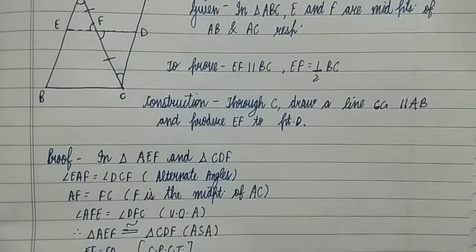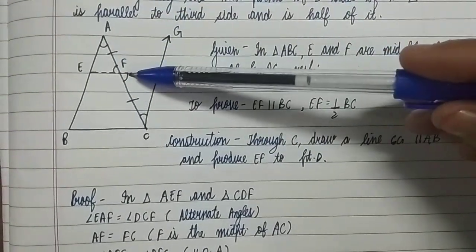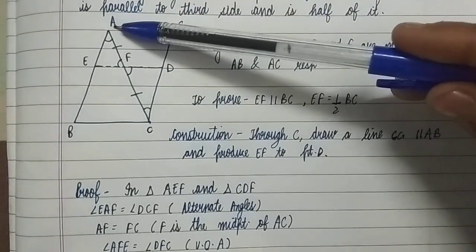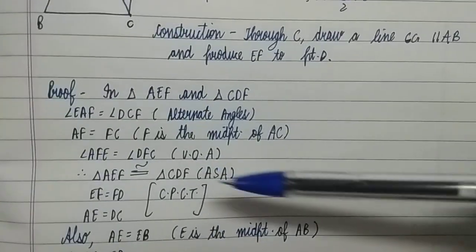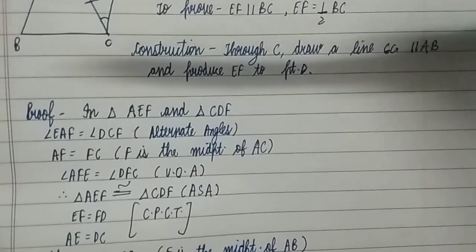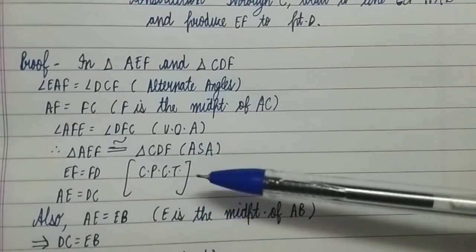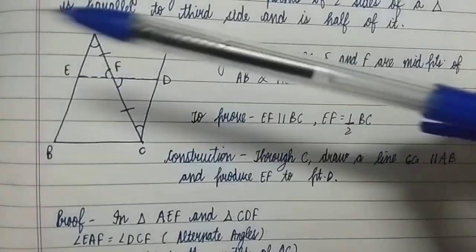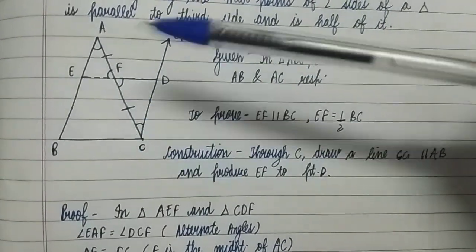Therefore by ASA rule, triangle AEF is congruent to triangle CDF. By CPCT we take EF equal to FD, and also AE equal to DC. We are also given that E is the midpoint of AB, therefore AE is equal to EB.